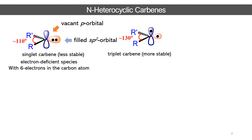If the carbene has a singly occupied orbital, the repulsion between a singly occupied orbital and a bond pair is comparatively less than the bond-pair/lone-pair repulsion, and thus it has a comparatively high R-C-R' bond angle of approximately 130 degrees. This is triplet carbene. Both carbenes are electrophilic species and can generally react with a nucleophile.